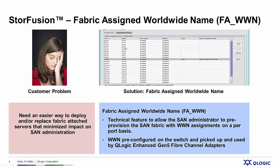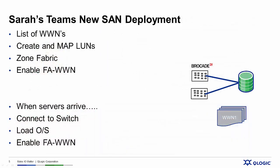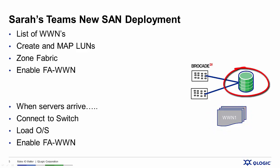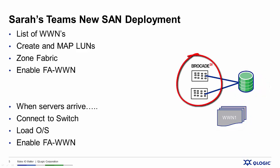When the servers and the adapters arrive, all that's required is to configure the adapters to enable Fabric Assigned Worldwide Name. The team needs to create a list of worldwide names to assign to each server, create and map LUNs in their storage device to those worldwide names, then log into the Brocade Fabric, enable Fabric Assigned Worldwide Name, and zone the fabric — making all the connections as if those servers were already physically connected to the environment.